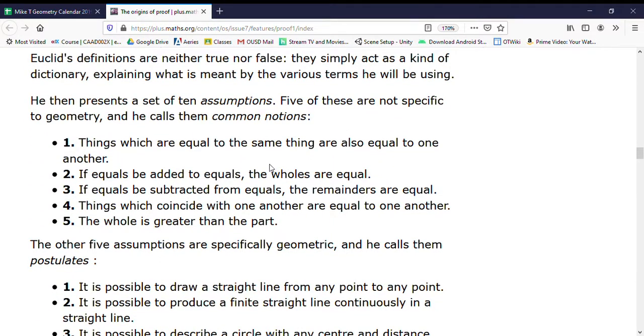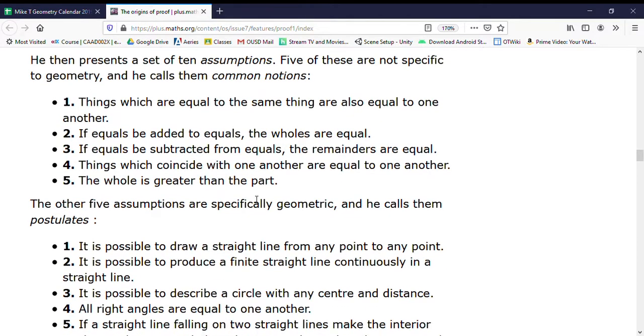But it boils down to these ten assumptions—these five common notions, like things that are equal to the same thing are equal to one another. That's like if one angle is equal to another and that angle is equal to a third, those two angles have to be equal. If equals are added to equals, the wholes are equal. So like if I have an angle that's 20 degrees and an adjacent angle that's 30 degrees, then the entire angle when those two are put together has got to be 50 degrees. Those are kind of common notions.